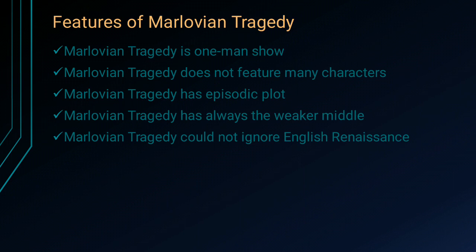The last important feature of Marlowian tragedy is that it could not ignore the English Renaissance. The English Renaissance had many such influences. The first influence is undoubtedly the unlimited quest for power and the unlimited quest for knowledge. Greater the knowledge and larger and deeper the suffering. So these are the important features you generally come across in Marlowian tragedy — you can never ignore the spirit of the English Renaissance.